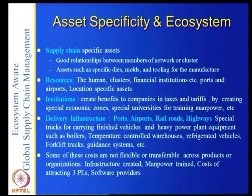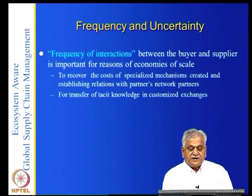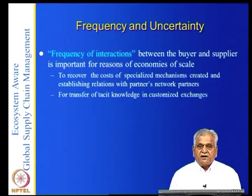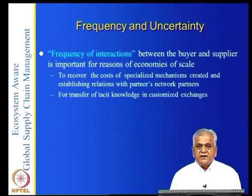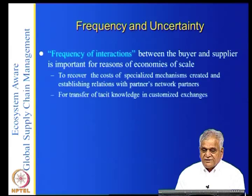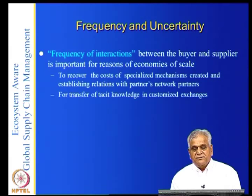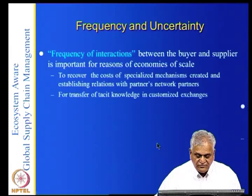Frequency of interactions between buyer and supplier is important because it creates economies of scale. If it is a one-time transaction, it may not be worth the cost of creating specialized mechanisms and established relations with a partner network. A manufacturer doing it for their own sake may have orders three or four times a season, whereas a trader doing it for several people and countries can get much more frequency. Environmental uncertainty can come from suppliers, customers, competitors, regulatory agencies, and financial markets.